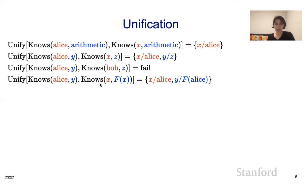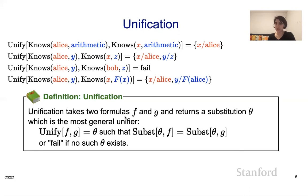Here's another example: unify(knows(Alice, y), knows(x, f(x))) returns: replace x by Alice, replace y by f(Alice). I've already replaced x by Alice in the substitution rule, so instead of f(x) I write f(Alice). More formally, unify(f, g) returns a substitution theta — the most general unifier — such that substituting theta into f gives the same result as substituting theta into g. It returns fail if no such substitution exists.